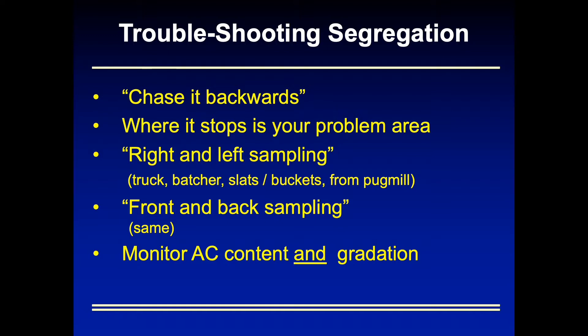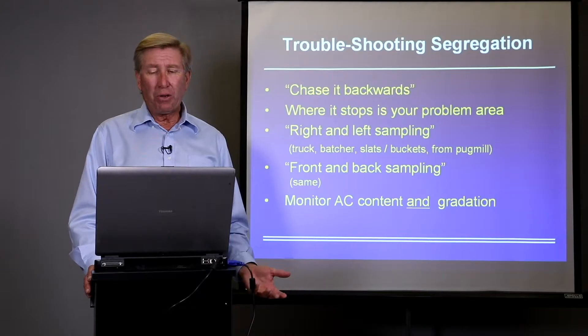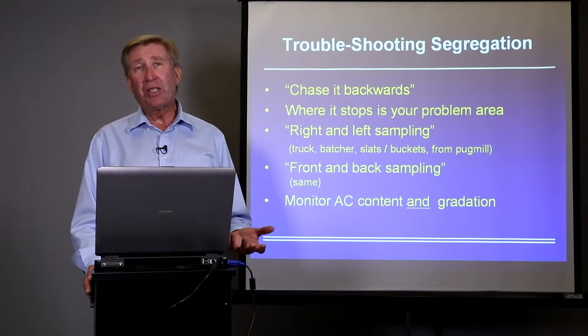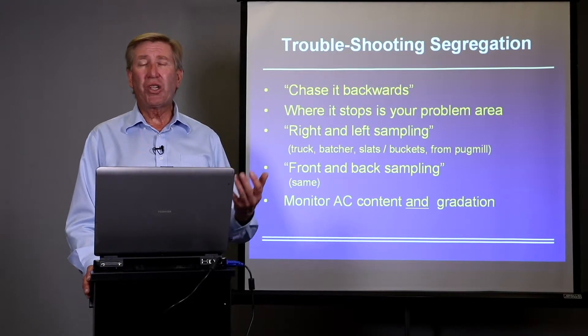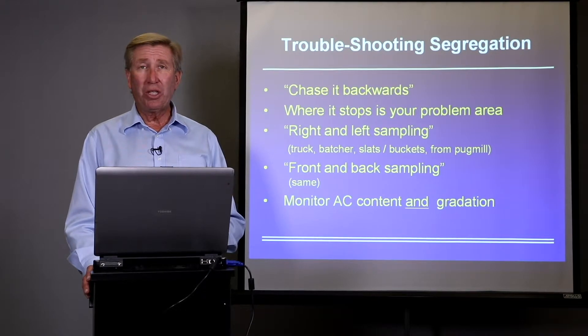You can do right and left sampling in the truck, in the batcher, or in the pug mill buckets if running a batch plant. You can also do front and back sampling in the truck. Look at asphalt content and gradation together — if your gradation goes coarse, usually your asphalt content drops; if your gradation goes fine, usually your asphalt content goes richer. A lot of calls about apparent asphalt cement problems are actually segregation or a plant problem — when you plot asphalt content against gradation, the real issue becomes clear.